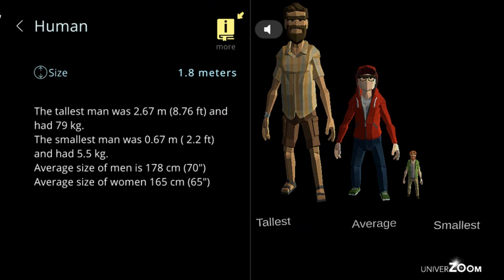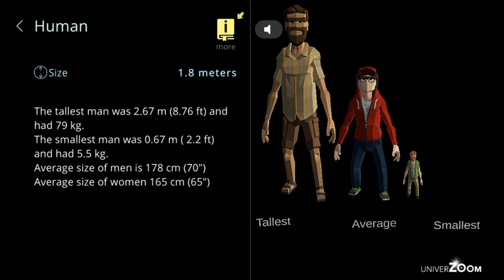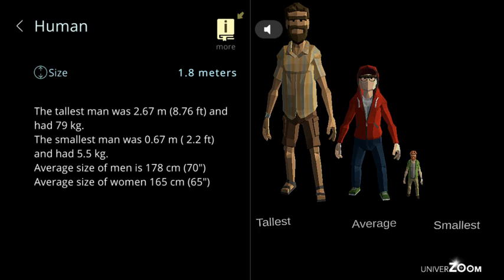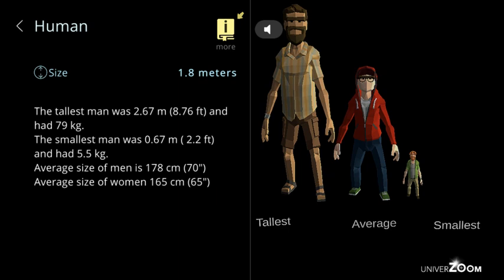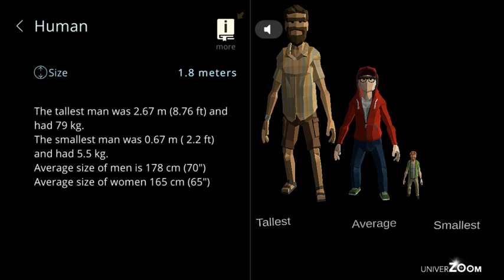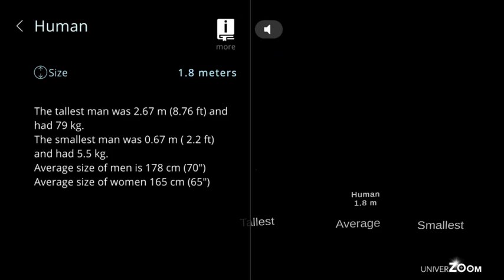Human, size: 1.8 meters. The tallest man was 2.67 meters, 8.76 feet, and had 79 kilograms. The smallest man was 0.67 meters, 2.2 feet, and had 5.5 kilograms. Average size of men is 178 centimeters, 70 inches. Average size of women 165 centimeters, 65 inches.